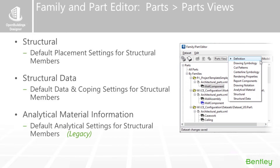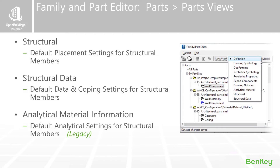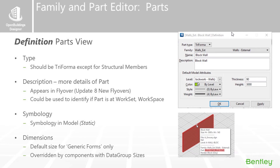When it comes to the actual parts, when you go to create a part in structural there are some placement options for structural members, and there is also structural data. So there's a regular part definition and then a structural part definition that has additional fields and capabilities. There's also the analytical material field, but that is also legacy — we have newer tools for doing analytical modeling, going directly to STAAD and RAM without having it in the BIM model. Within a part dialogue box when you go to edit or create a part, there are two types: a Triforma part, which is a base building type part, and a structural part.